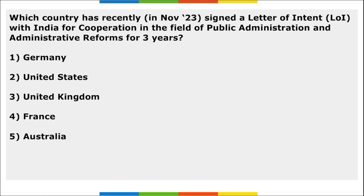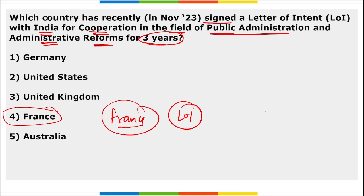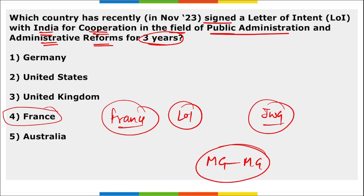France recently signed a letter of intent with India for cooperation in the field of public administration and administrative reforms for three years. A joint working group will be established to create a roadmap for bilateral cooperation. India presented PM Narendra Modi's vision of maximum governance, minimum government policy during this process.